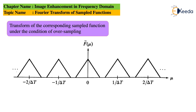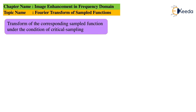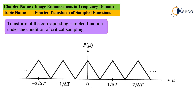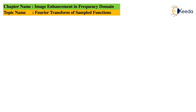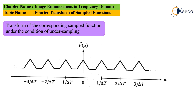For over-sampling of a band-limited signal, the Fourier transform F(μ) shows replicas spaced at 1/ΔT and 2/ΔT on both positive and negative sides with no overlap. Under critical sampling, the spacing between adjacent samples in the transform just touches — there is no gap between replicas. Under under-sampling, the replicas overlap, causing aliasing, and the resulting graph shape corresponds to the distorted Fourier transform of the sampled function.